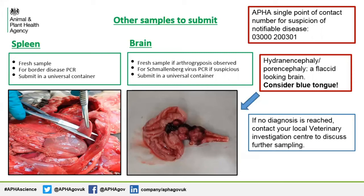Other samples required for our routine panel of tests are fresh spleen for border disease PCR, and fresh brain for Schmallenberg PCR if you observe arthrogryposis. It is important that you try to remove the cap of the skull to allow examination of the brain and check for abnormalities such as hydranencephaly, which often presents as a flaccid brain. Blue tongue must be considered if you observe this change of the brain. Remember that blue tongue is notifiable, so if you do suspect this disease APHA must be notified via the 03200 301 single point of contact number. Sometimes the brain can be almost liquified as a result of autolysis, but it is still worth collecting your fresh sample.